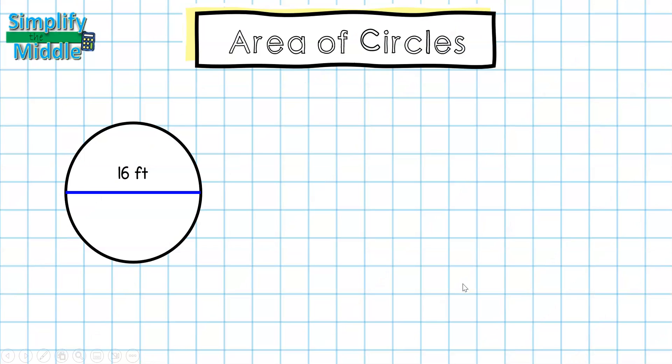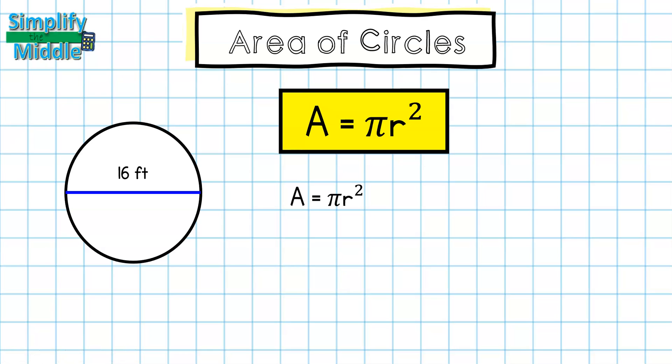Let's look at another example. Here we have a circle that is 16 feet by diameter. So let's go ahead first and write out our formula: area equals pi r squared. And I always like to rewrite it, so I'm going to rewrite it as area equals pi times radius times radius, so I remember I'm multiplying the radius by itself, not by 2.